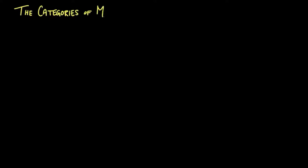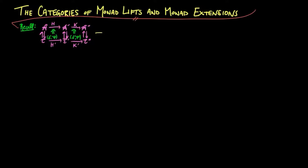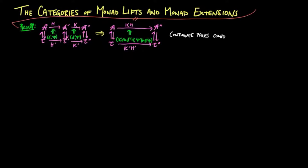We now give a categorical structure to the collection of monad lifts of Eilenberg-Moore categories and monad extensions of Kleisli categories. Recall how conjugate pairs compose horizontally — this was given in our playlist on adjoint situations. Precisely, if delta-psi and delta-prime-psi-prime are conjugate pairs for the respective squares, where the vertical functors are in an adjoint situation, then k-delta-delta-prime-h-prime-psi-prime-h-k-prime-psi is a conjugate pair for the horizontal composition of squares.